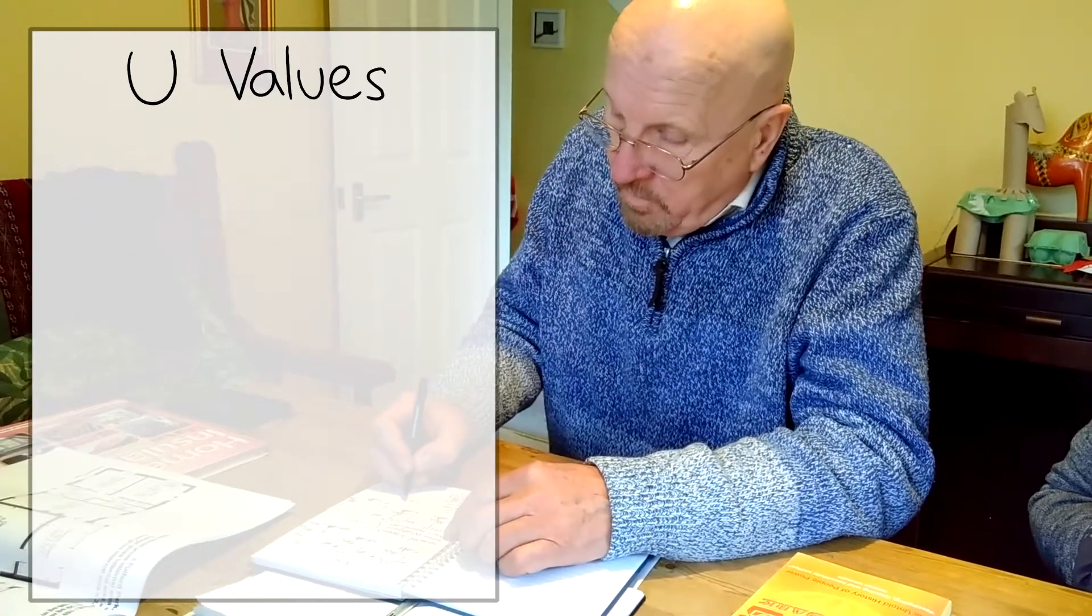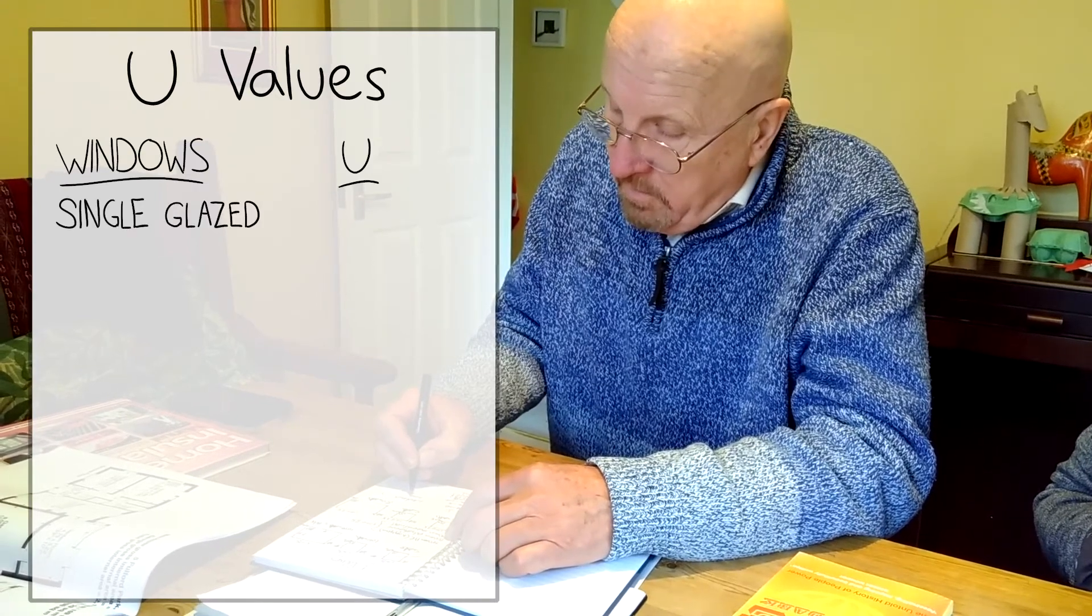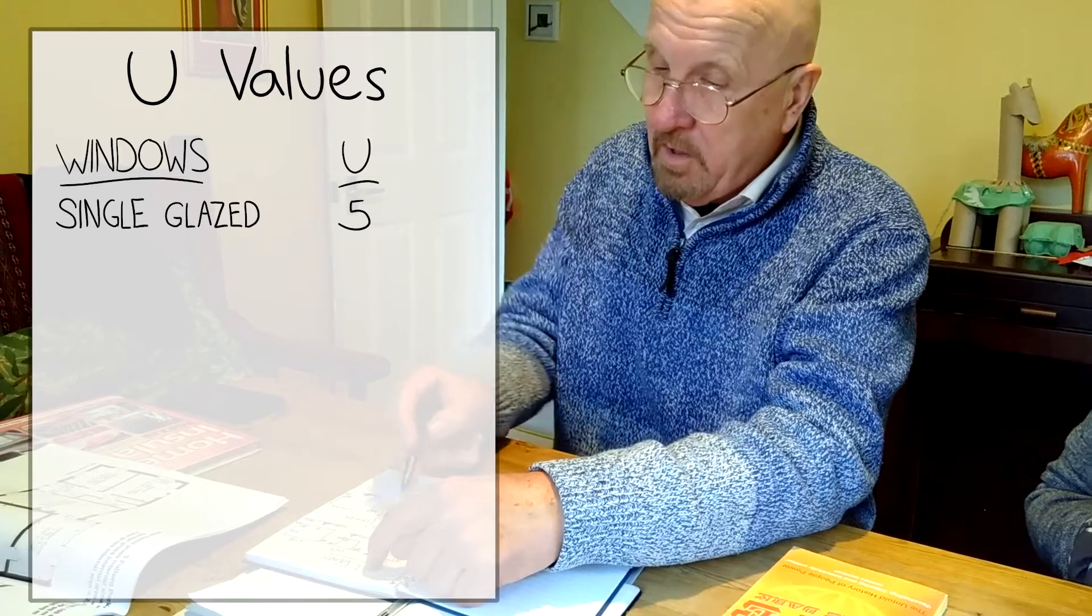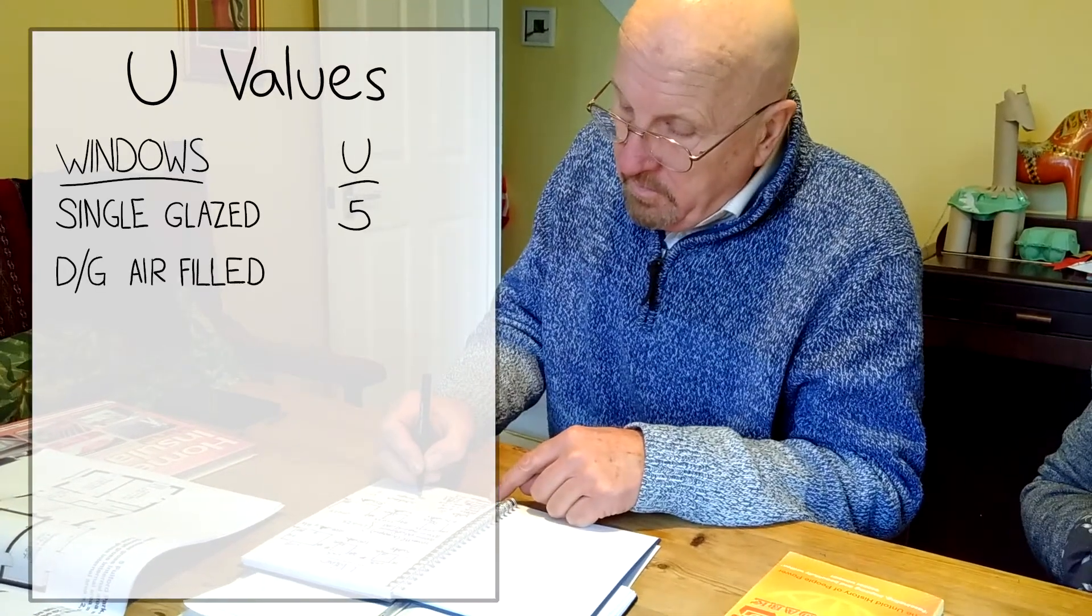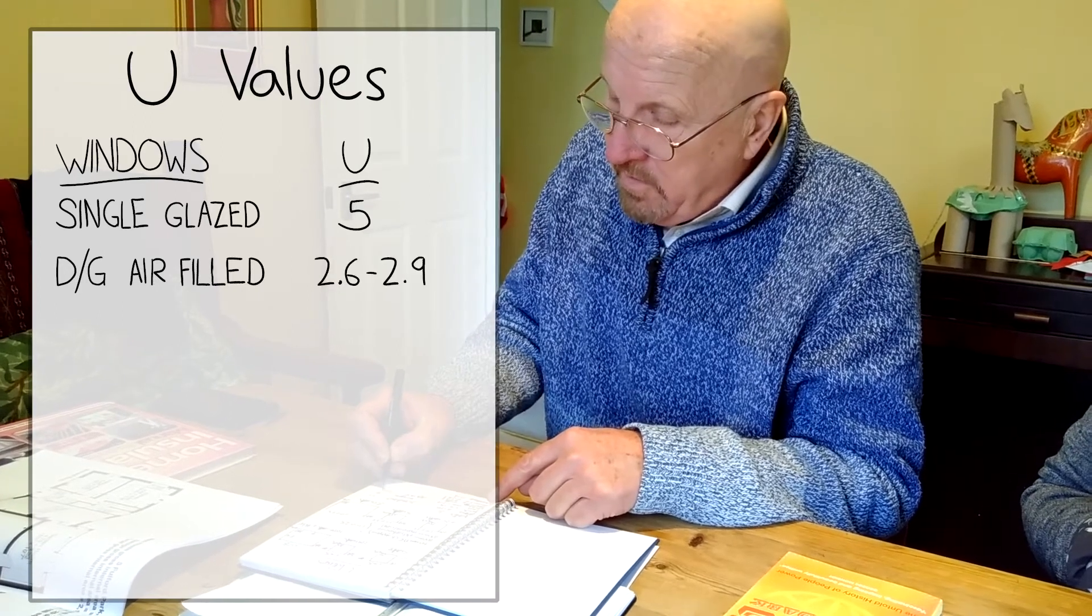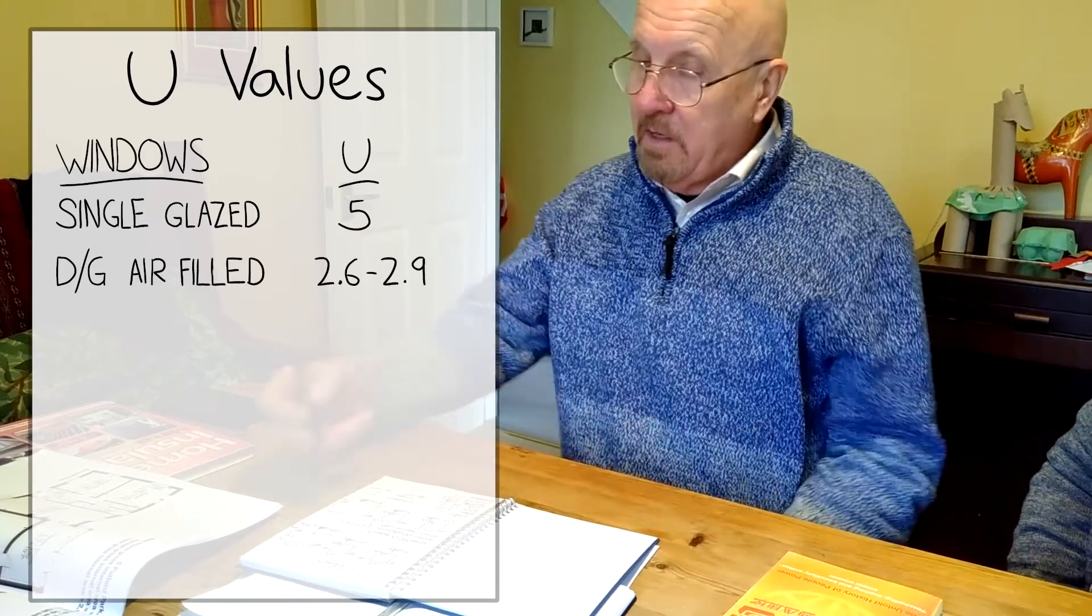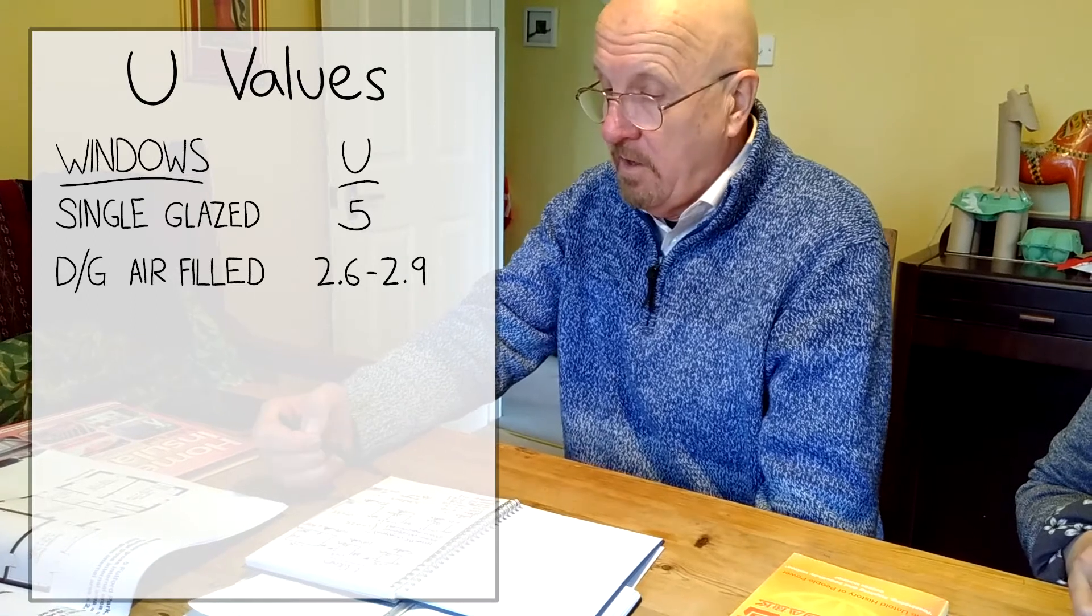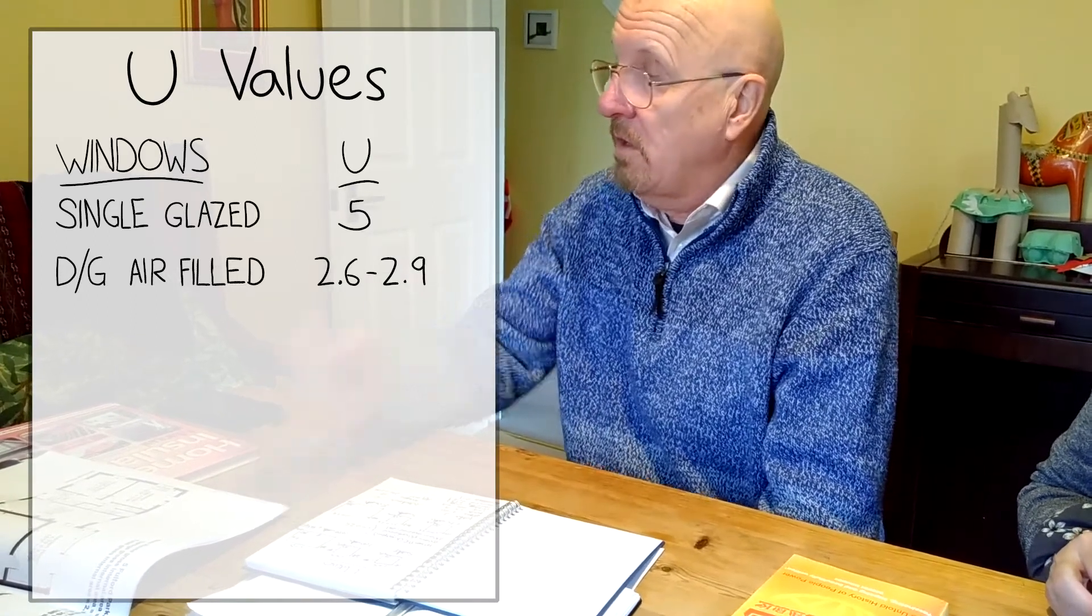Just to complete the picture with windows. U-value, single glazed window. We're looking at about five. So you can see five in my example was fair for a lot of houses. Double glazed window with air filled inside it. 2.6 to 2.9. Pretty bad, actually. You can imagine if you've got a fair few square meters of window, that's hundreds of watts just through the glasswork.